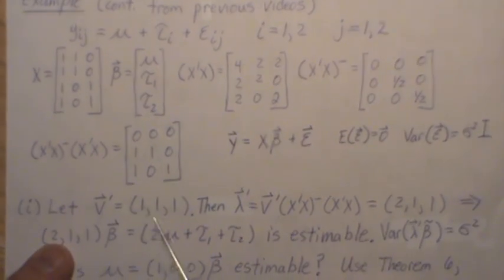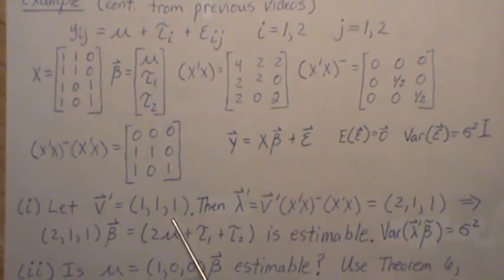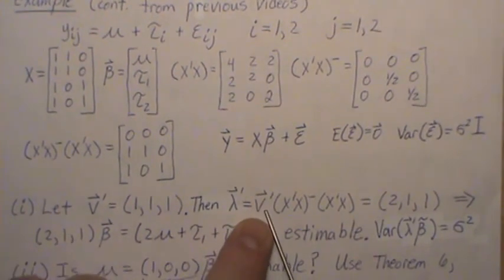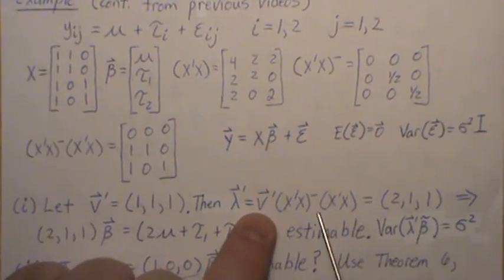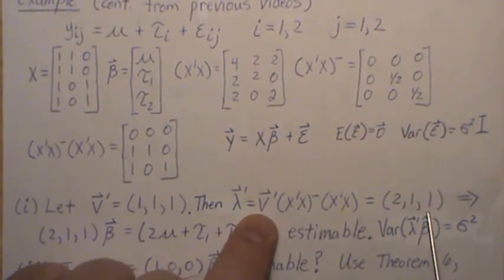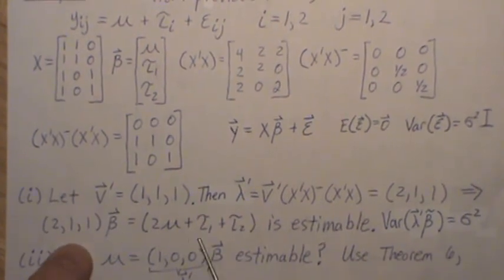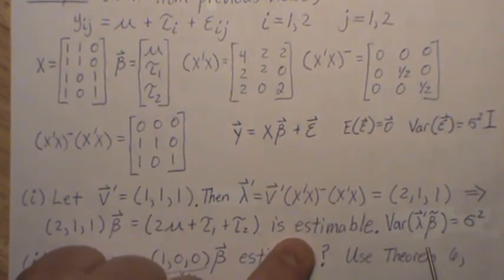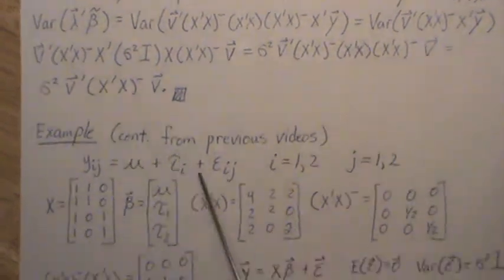So now let's do an example. Let V1 be 1, 1, 1. And now I did pick that random, but as I look at it, it's all 1, so how random could it be? Now, then we take that, make the vector that I just generated randomly, post-multiply it by this, and we get 2, 1, 1. So that tells me that 2, 1, 1 beta, which is this, is 100% estimable. And it has a variance of sigma squared after you do this multiplication right here.